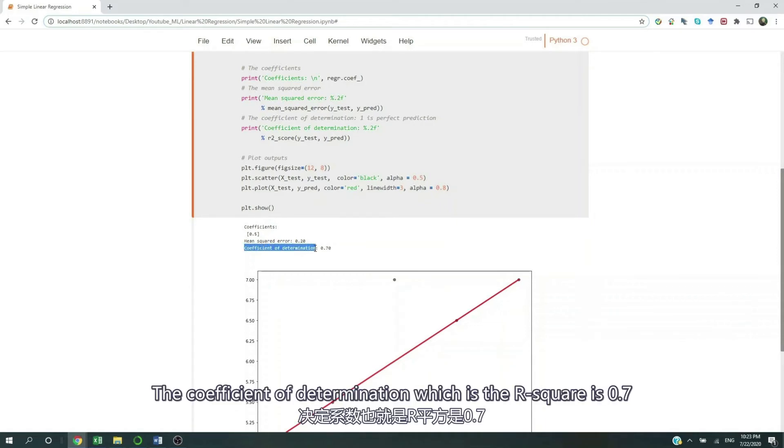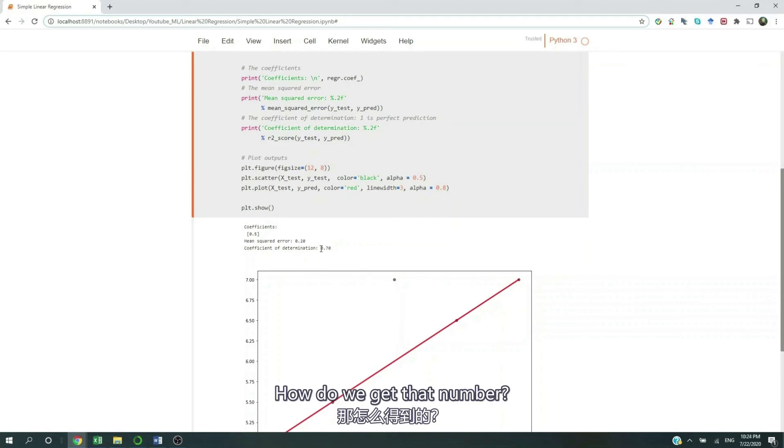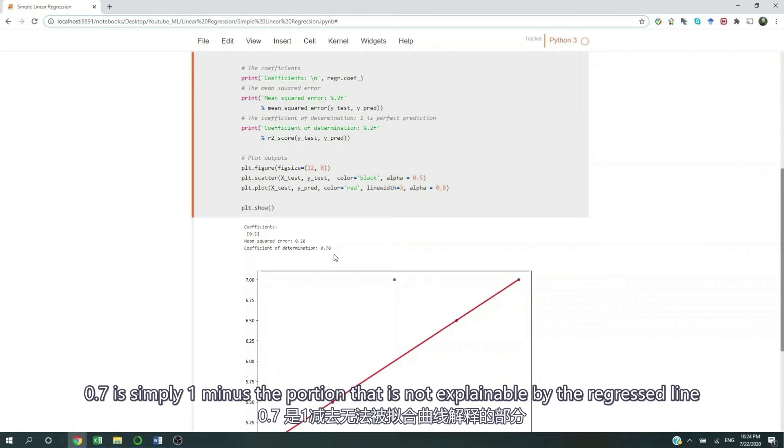The coefficient of determination, which is r squared, is 0.7. Now, how do we get that number? 0.7 is simply 1 minus the portion that is not explainable by the regression line,